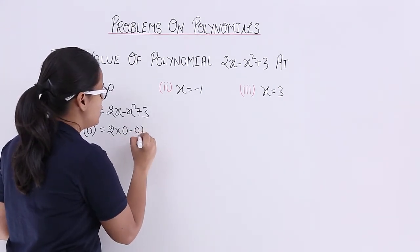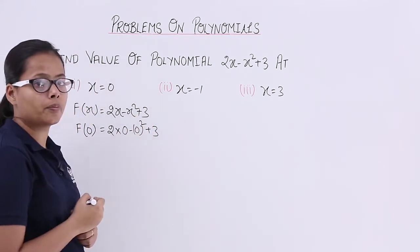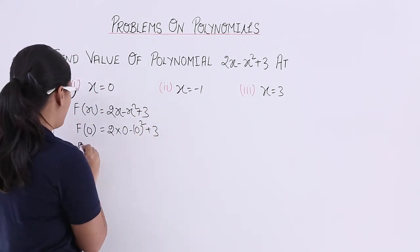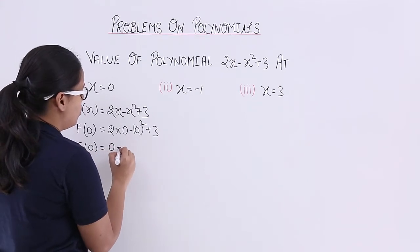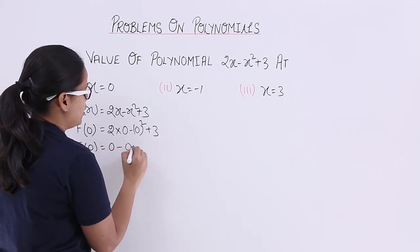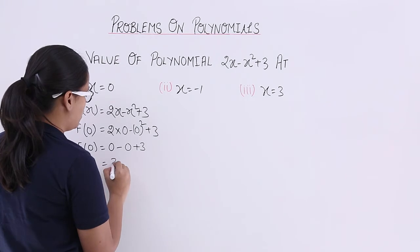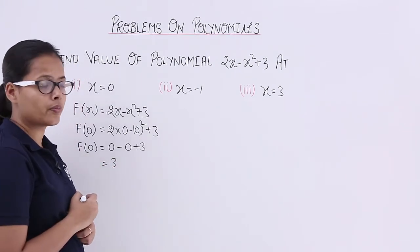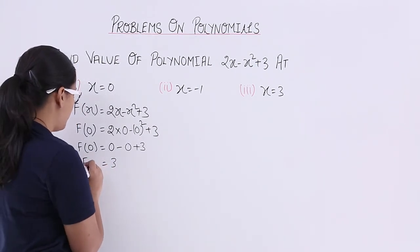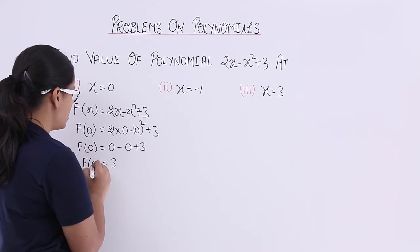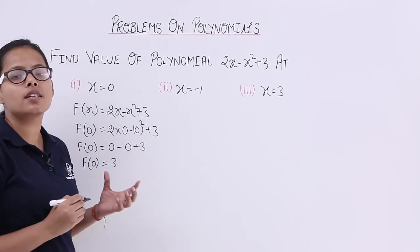So we get 2(0) - (0)² + 3. What will be the value for f(0)? It is 0 - 0 + 3, which is equal to 3. So the value of this polynomial at x = 0 is 3.